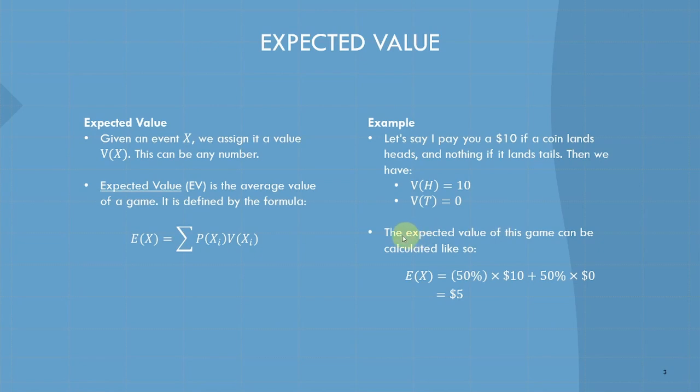The next concept you'll need to understand is expected value. Let's go over the formal definition. Given an event X, we assign it some value. This can be any number. We say the expected value of a game is defined by the following formula. E of X, the expected value of X, is the sum of the probabilities times the values. Intuitively, what does this mean? It's an average. An expected value is a broader definition of an average.